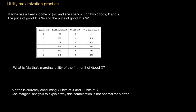Martha has a fixed income of $20 and she spends it on two goods, X and Y. The price of good X is $4 and the price of good Y is $2. The table here shows us the total utilities, or total benefits, that Martha receives from goods X and Y at a range of quantities from 0 to 5.